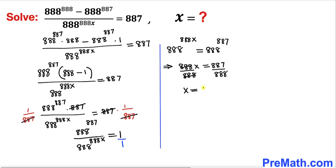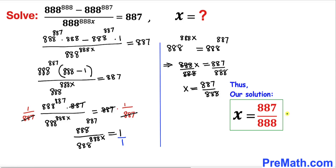They cancel out, and x turns out to be equal to 887 divided by 888. And here's our solution! Thanks for watching and please don't forget to subscribe to my channel for more exciting videos.